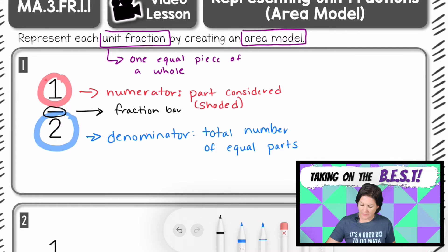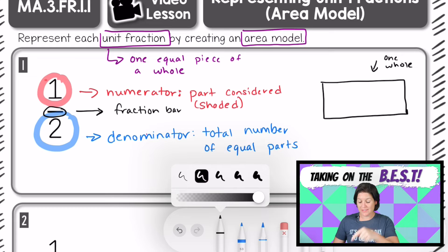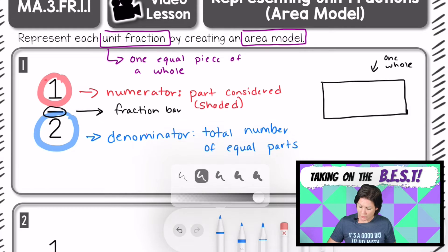So first we need to look at our denominator. The denominator is two. That means that if we have one whole, and usually with an area model, I like to use rectangles because it's easier to break it apart. So if we have one whole, this is one whole piece right here. But our denominator tells us that we need to break this whole into two equal parts.